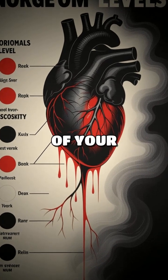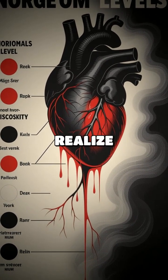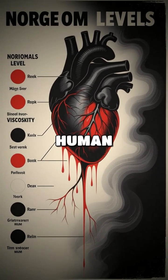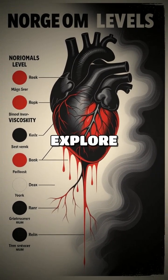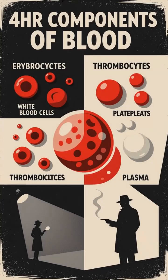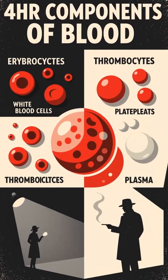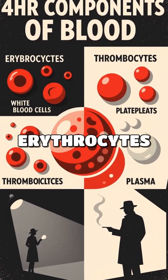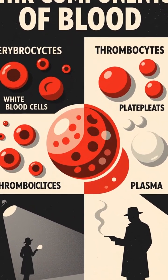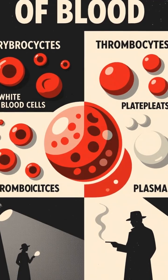Did you know that the viscosity of your blood can affect your health more than you realize? Today we dive into the fascinating world of human blood and explore its critical role in sustaining life. Human blood is composed of four main components: erythrocytes, leukocytes, thrombocytes, and plasma. Each plays a vital role in our overall health.